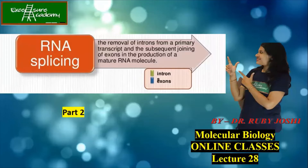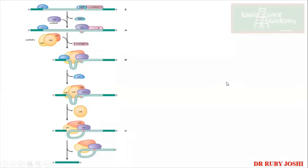Hello and welcome back to Excelsior Academy. We were doing RNA splicing, and let us just summarize first what we have discussed in the previous class. We have talked about the different mechanisms and machinery involved in RNA splicing.